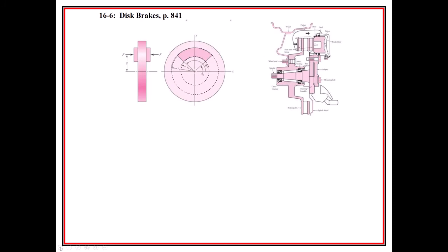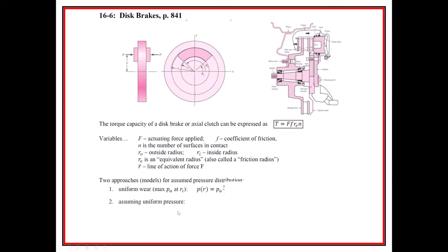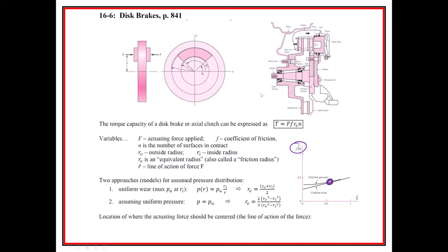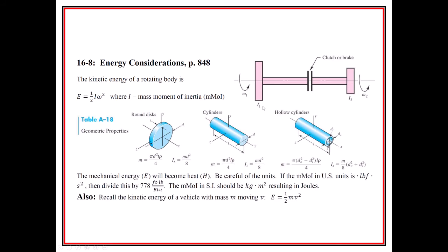The two results — 2,247 pounds for uniform wear versus 2,222 pounds for uniform pressure — are very close, which is consistent with what we saw in the graph from class. The non-dimensional torque values converge as the ratio of inner to outer radius changes, so the small difference is expected.